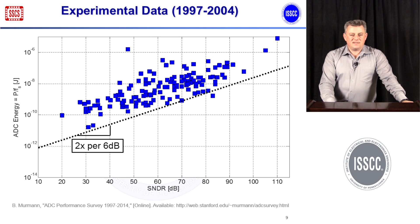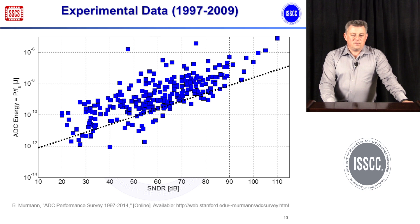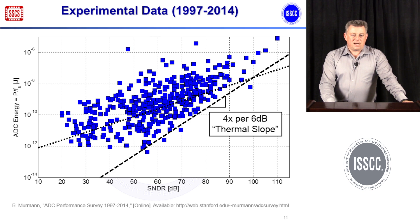What you see is that the leading edge snaps onto a slope of roughly 2× increase in energy per 6 dB in resolution — that was the leading-edge trade-off slope in 2004. Advancing to 2009 and then 2014, the leading edge above 50 dB resolution snaps onto a different slope corresponding to the thermal trade-off of 4× per bit. So these practical trade-off slopes change over time.